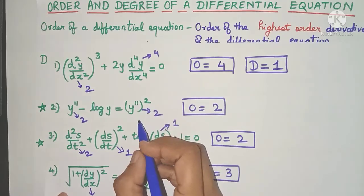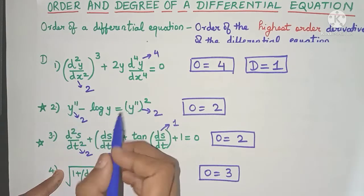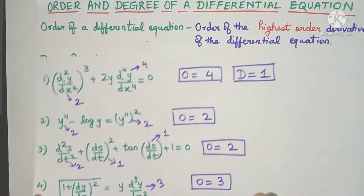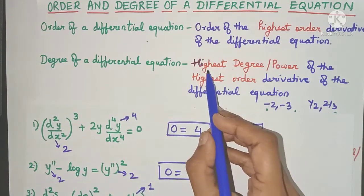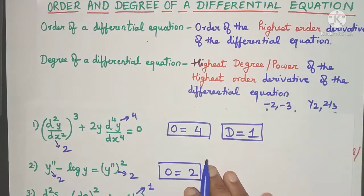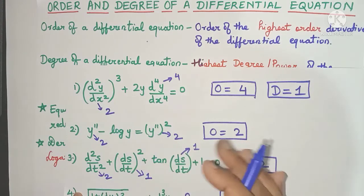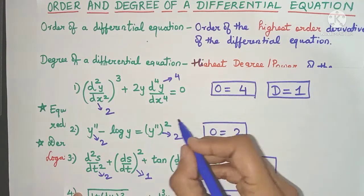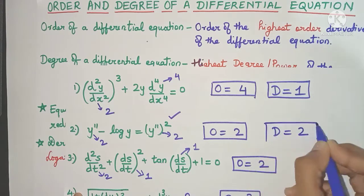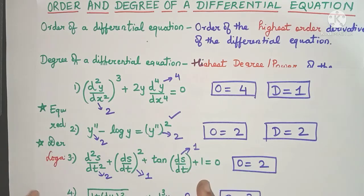In the next example, both derivatives are of the second order, so the highest order is 2. When the highest order derivative appears more than once, find the highest degree among those occurrences. Here one has degree 1 and the other has degree 2, so the highest degree is 2. Therefore, 2 is the degree of this differential equation.